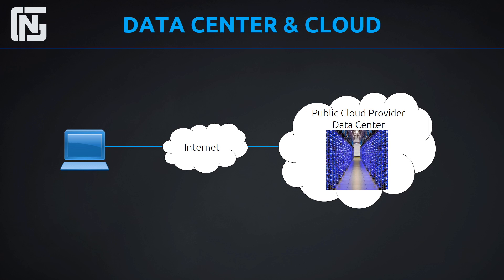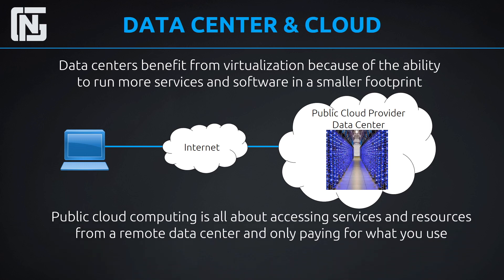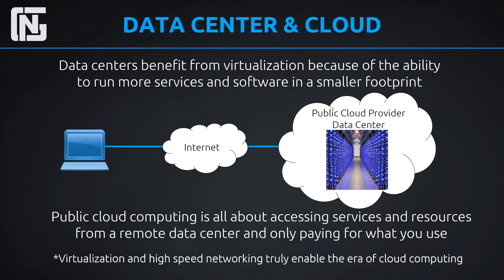Data centers benefit from virtualization because they can run so many services and software in a much smaller footprint. Think of a huge data center with all these physical servers — the scale is much larger than a regular corporate IT department. If we can consolidate hardware in a really large data center, that gives us a much smaller footprint, less cooling, and we can run more servers and services. Public cloud computing is all about accessing servers, services, and resources that live in a remote data center and only paying for what you use — the CPU, RAM and storage you're actually using. It's a metered service, and virtualization combined with high-speed networking have truly enabled the era of cloud computing.